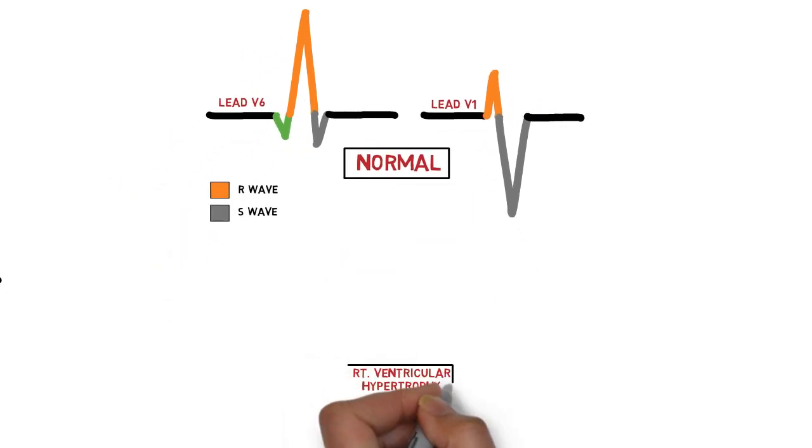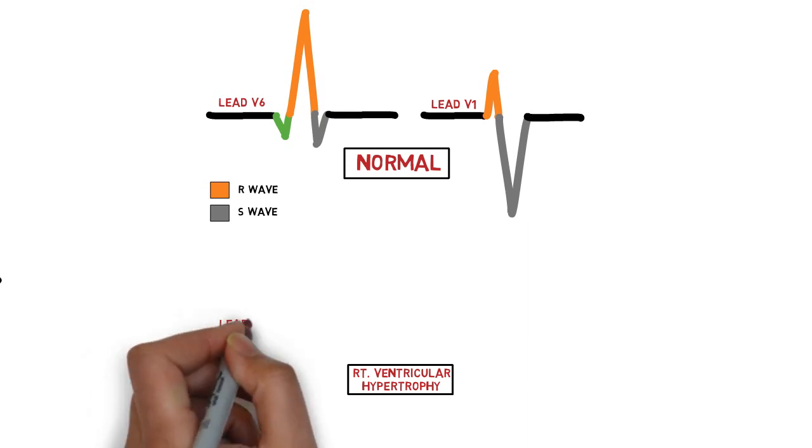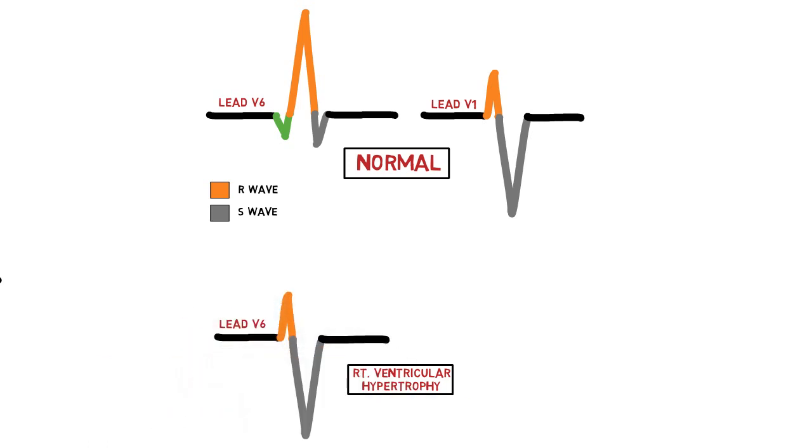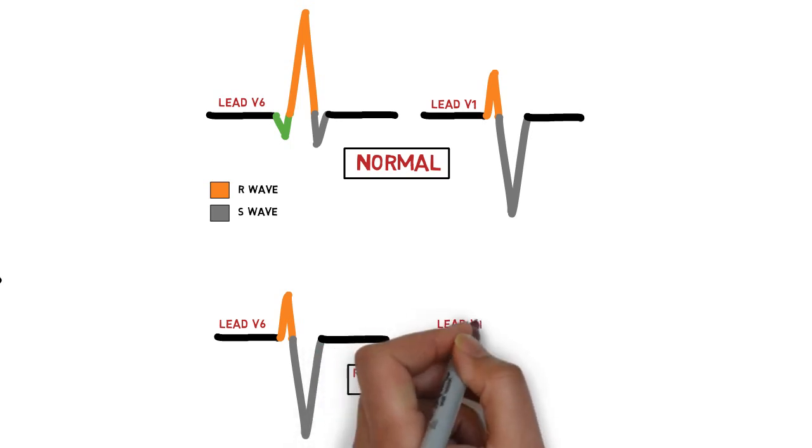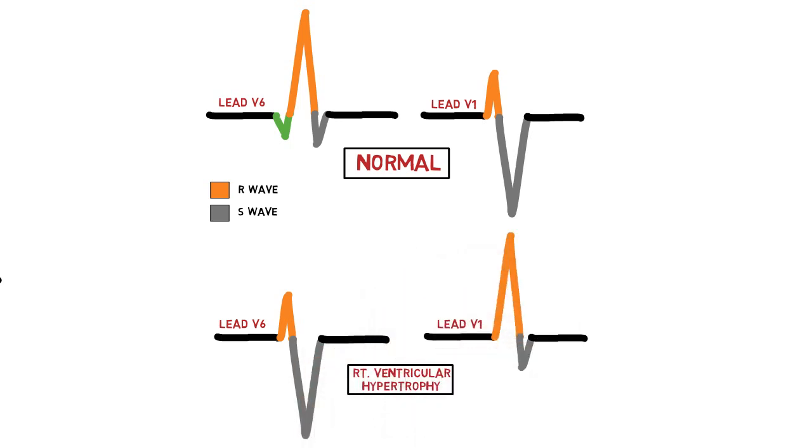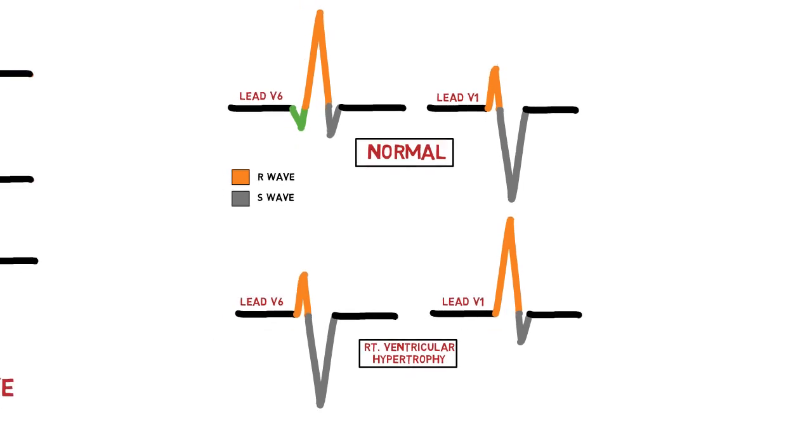In right ventricular hypertrophy, the right ventricle is bigger than the left. As we recall, more muscle mass means more electrical strength, so the vector for ventricular depolarization will be directed to the right instead of left. Depolarization away means there will be downward deflection recorded in lead V6, and depolarization towards means upward deflection recorded in lead V1. Again, these are the basics we learned previously in Fundamentals of ECG. If you have not watched those videos, this will be terribly confusing and complicated.